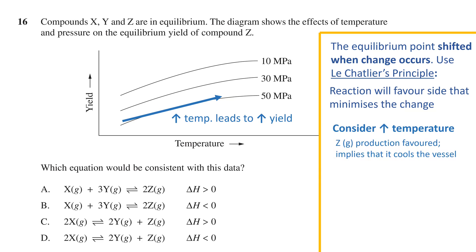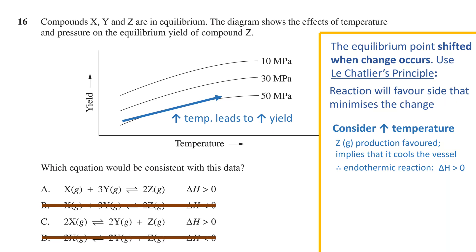This means the production of compound Z cools the vessel to counteract the change, as per Le Chatelier's principle. Therefore, the forward reaction must be endothermic and delta H is greater than zero — i.e., heat energy is absorbed and more energy ends up in the chemical bonds. That eliminates options B and D, as those are exothermic with delta H less than zero.